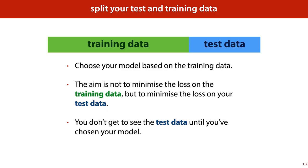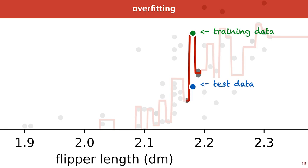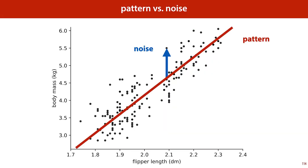The simplest way to check this is to withhold some data. You keep some data hidden from the model and train on the rest. You then check how well a particular model does on this withheld part of the data. The data you show to your model is called training data, and the data you withhold is called test data. When we plot the test data as well as the training data, we see that the regression tree is a terrible model. The training data may show a spike in body mass at a flipper length of 218 millimeters, but the test data will just follow the linear pattern. The task is not to fit the training data as precisely as possible — it is to fit the pattern in the data and to discard the noise.